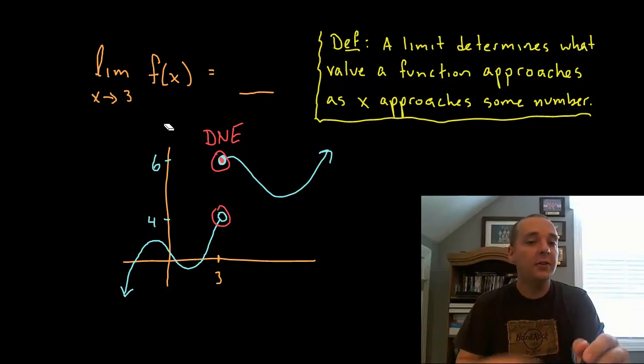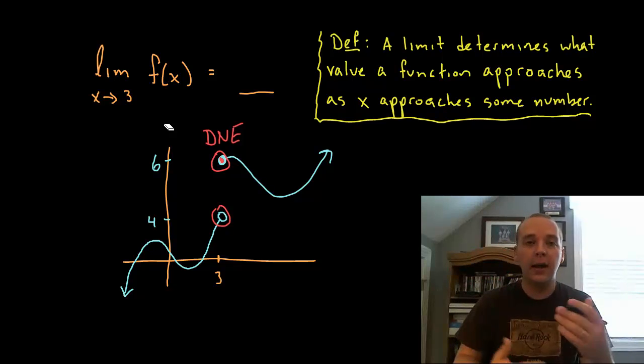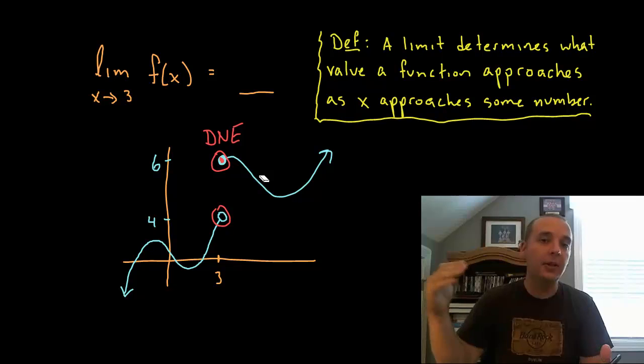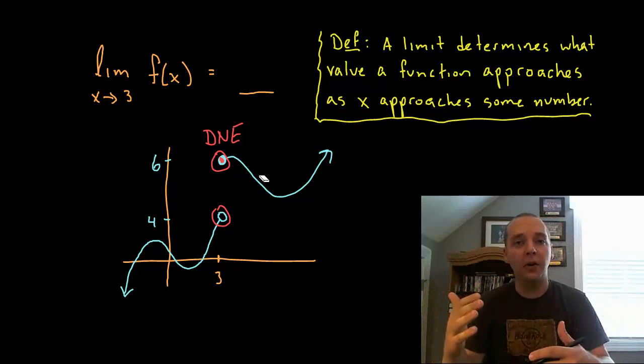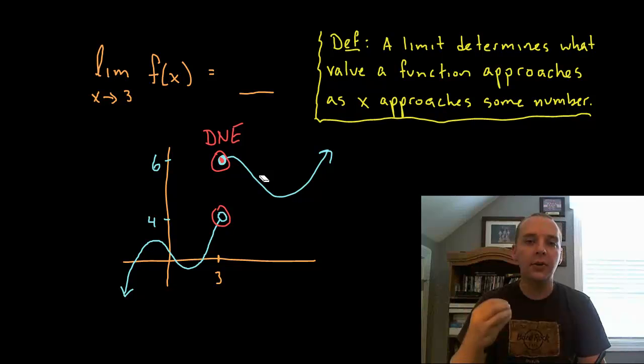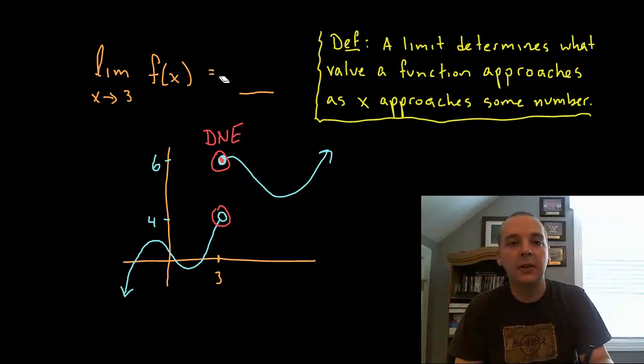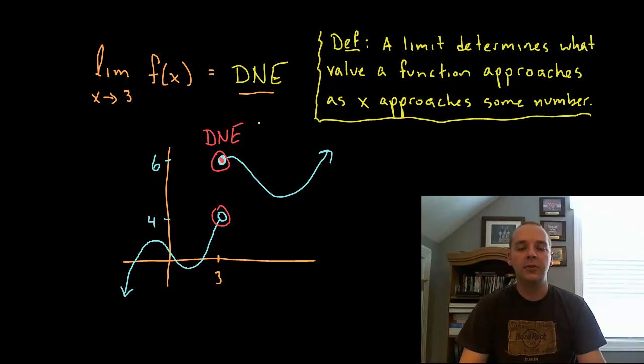Now what we wind up seeing based off of all this is there's not one number that the function approaches. If you say the answer is 4, I could counter argue that well the right side doesn't go to 4, it goes to 6. And so if you say well the answer is maybe the limit is 6, I could say well the left side goes to 4 and not 6. There's no definitive value that this function approaches. So for this limit we would say this one does not exist, so just be aware of that.